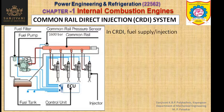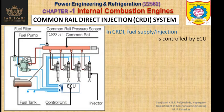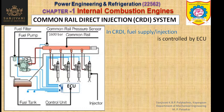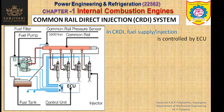In CRDI, the fuel injection or the supply of fuel is controlled by the ECU — the Electronic Control Unit. In the Common Rail Direct Injection system, the fuel injection is controlled by the electronic control unit, and the injectors are also controlled by the electronic control unit.